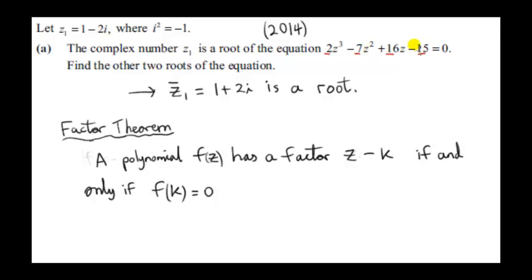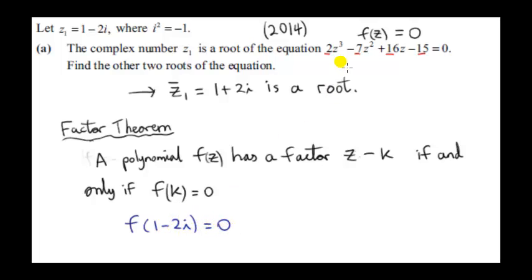In this example, our polynomial is a cubic polynomial, so here is our f of z. We're trying to solve the equation f of z equals 0. We are given that f of 1 minus 2i is equal to 0. If we plug 1 minus 2i in for z and evaluate, we get 0. So that's our k. If we use the factor theorem, it tells us that if f of k is 0, then z minus k is a factor. So z minus k, where k is 1 minus 2i, is a factor.